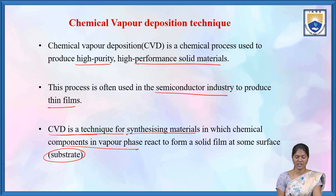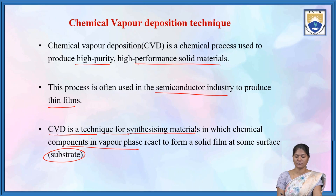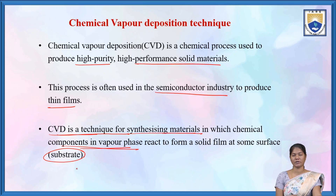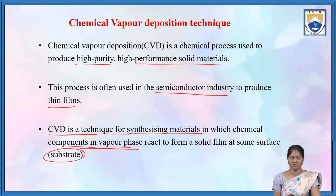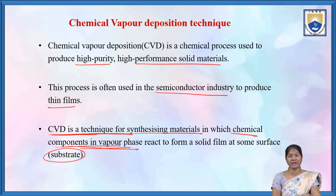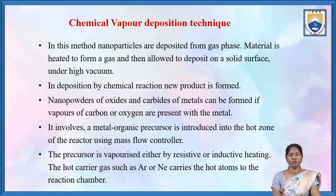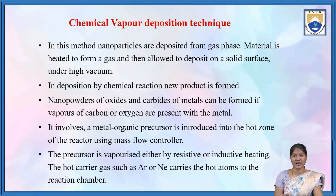Chemical vapor deposition is a technique for synthesizing nanomaterials. We are synthesizing materials in which the chemical component in vapor phase reacts and it forms a solid film on the substrate.